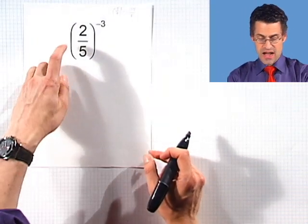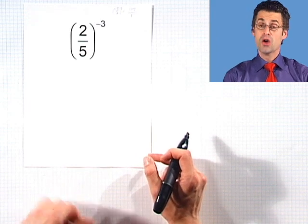How about this one? Here I've got 2 fifths raised to the negative 3 power. What does that mean?